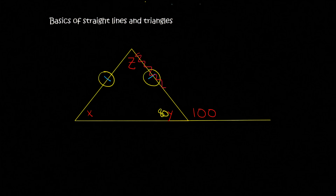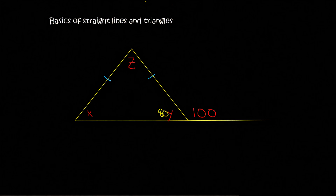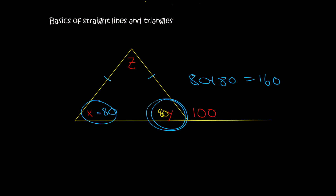If we look at this side over here, the angle that is opposite that is this one. And then if we look at this length over here, the angle that is opposite that is this one. So we can say that these two angles are the same, which means X is also going to be 80. Now these two together already add up to 80 plus 80, which is 160. We know that all three angles of a triangle should add up to 180, and so Z is 20 degrees.